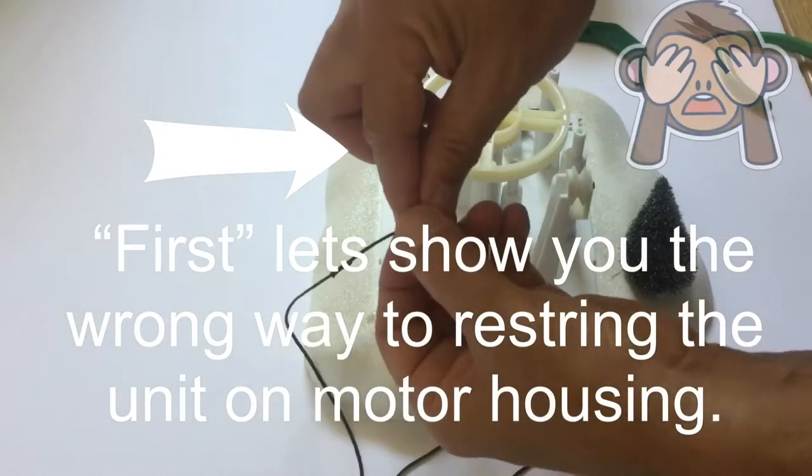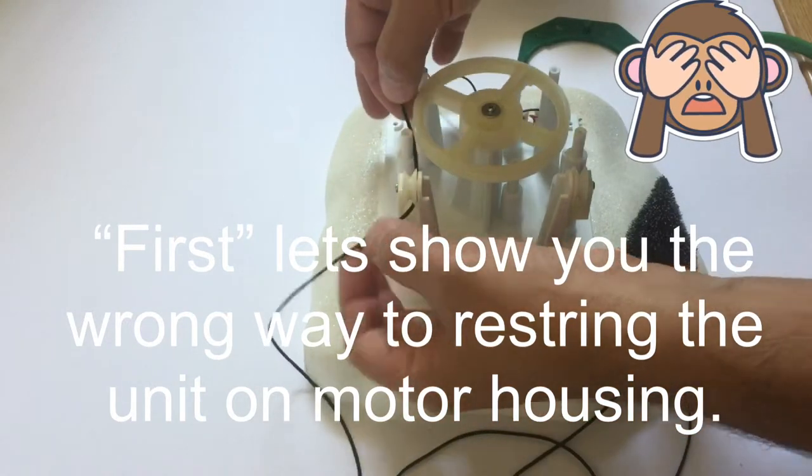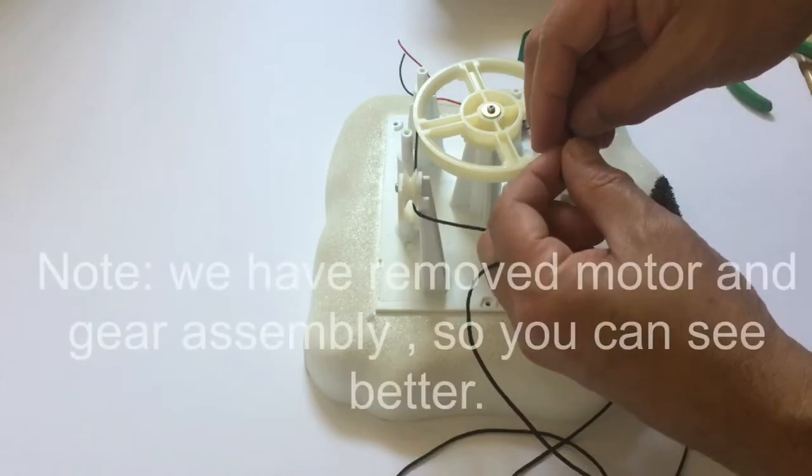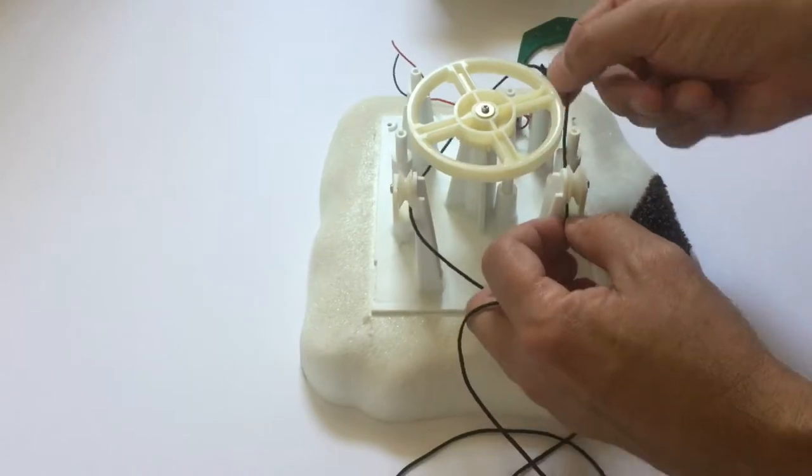A lot of units that come in, people have rewrote the unit wrong. Let's show you how not to restring the motor housing unit. We have also removed the gears and the motor assembly so you have a better picture.